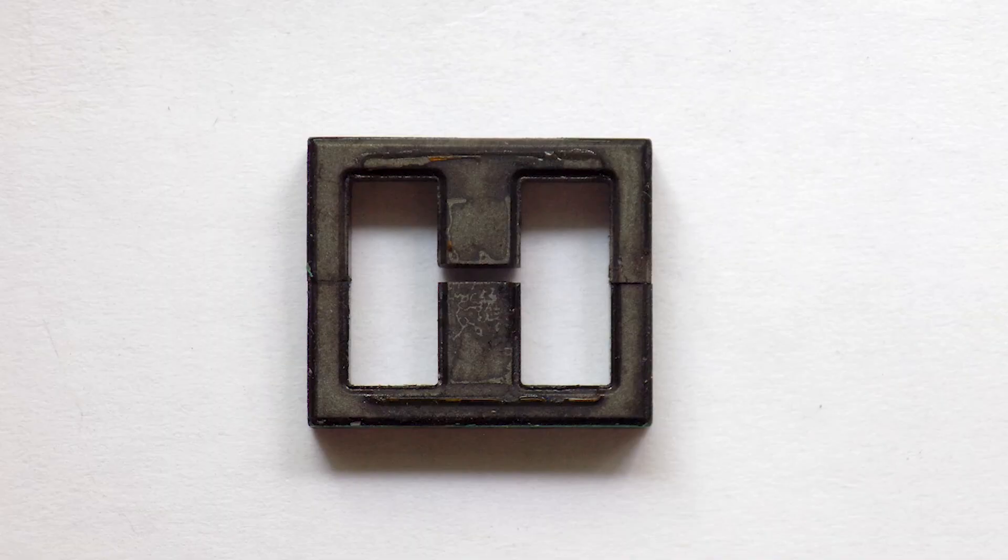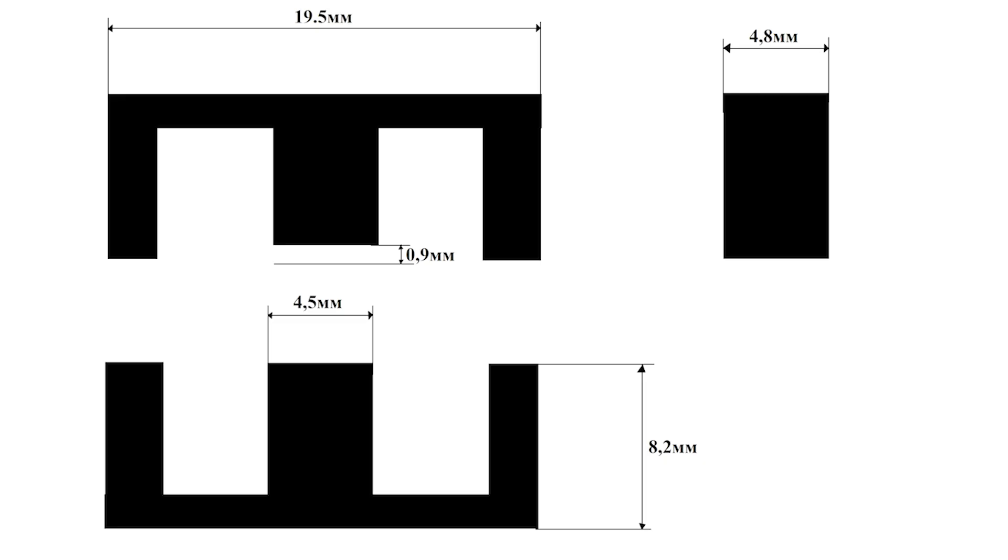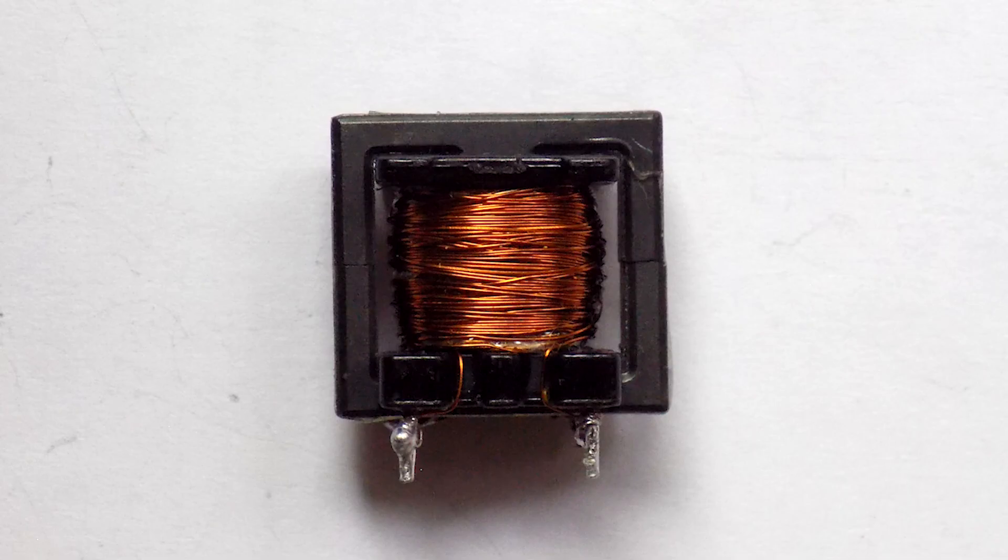The core from the throttle looks like this. It has a gap on the middle column, just what we need. You can see the dimensions of the core on your screen. Gap 0.9 millimeters. Then we take our frame with primary and secondary windings and insert the core into it. So that the halves of the core do not fall apart, they can be wrapped with tape or simply glued together.